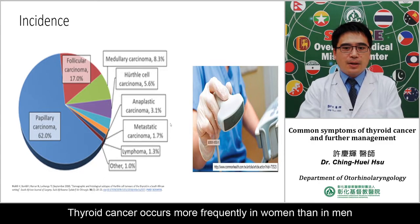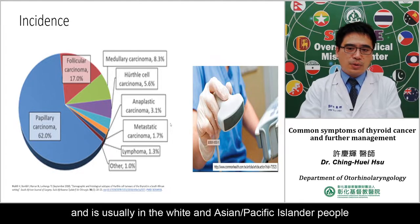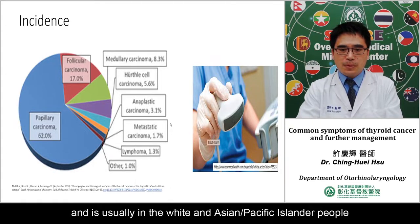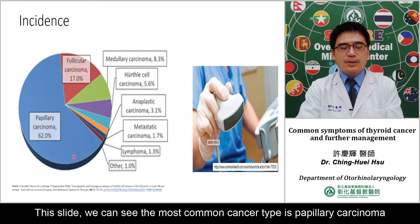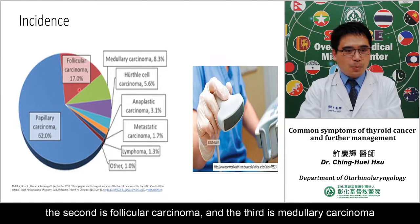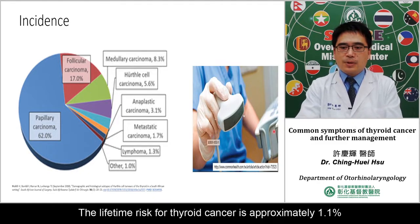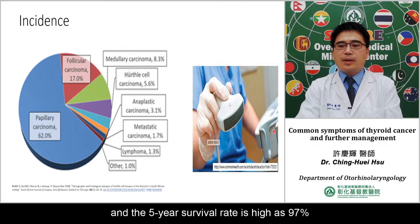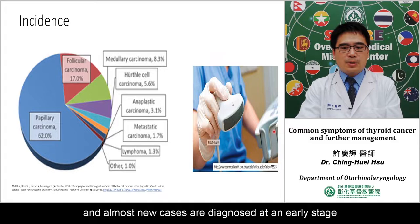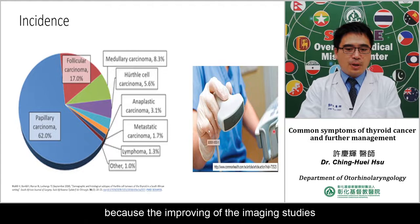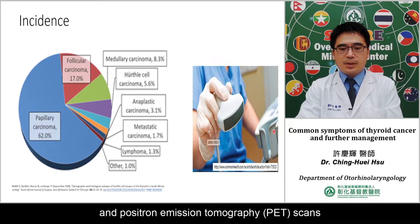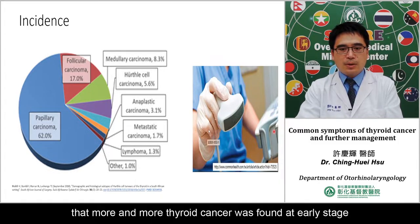The thyroid cancer incidence occurs more frequently in women than men, approximately 3:1, and usually occurs in white and Asian people. The most common cancer type is papillary carcinoma, the second is follicular carcinoma, and the third is medullary carcinoma. The lifetime risk factor is approximately 1.1%. The five-year survival rate is higher than in 1970 because more new cases are diagnosed at early stage, due to increasing imaging studies like ultrasound, CT, MRI, and PET scans.